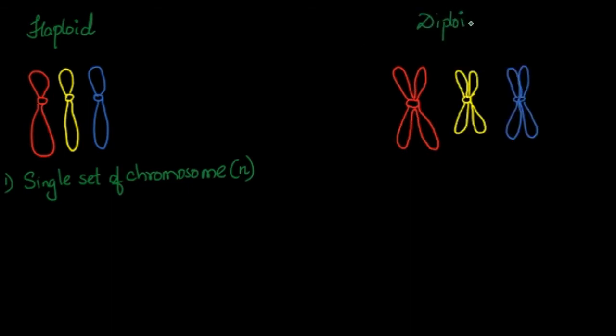And the diploid that has two sets of chromosomes. In humans, n is equal to 23, whereas for the diploid it's 46.